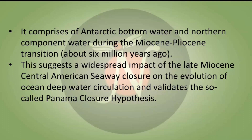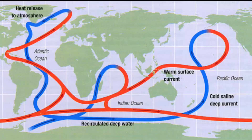This suggests a widespread impact of the late Miocene Central American seaway closure — the Panama closure — on the evolution of ocean deep water circulation, and validates the so-called Panama closure hypothesis. You can see the Indian Ocean here and the Panama Isthmus here, with this side of the Indian Ocean near the area where deep water circulation basically originates.